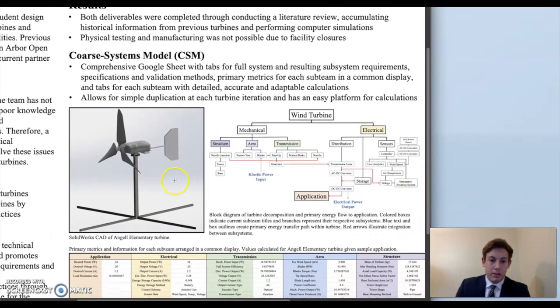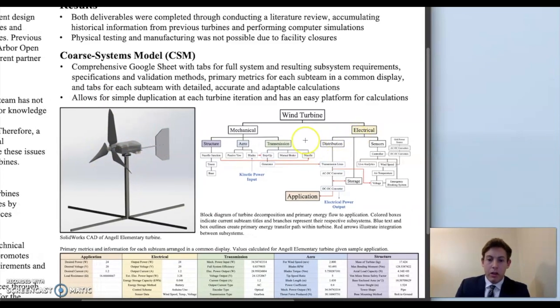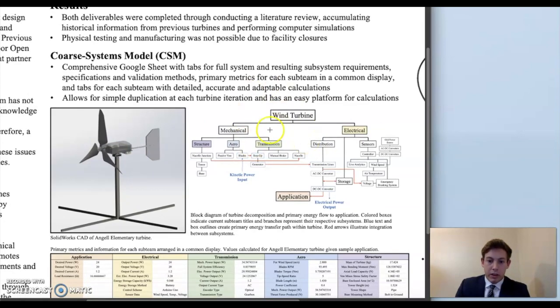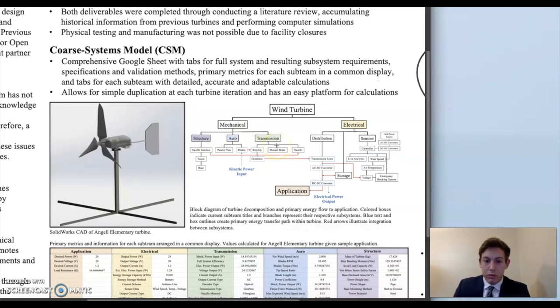For reference, here is the CAD of the latest turbine for Anja Elementary School, and here is a block diagram of the wind turbine breaking it down into subsystems and in some cases components. The highlighted blocks here are the different sub-teams on Woven Wind: structure, aero, transmission, electrical, and application.